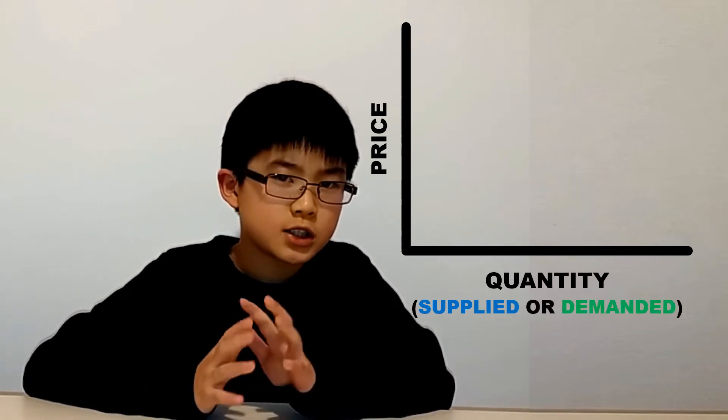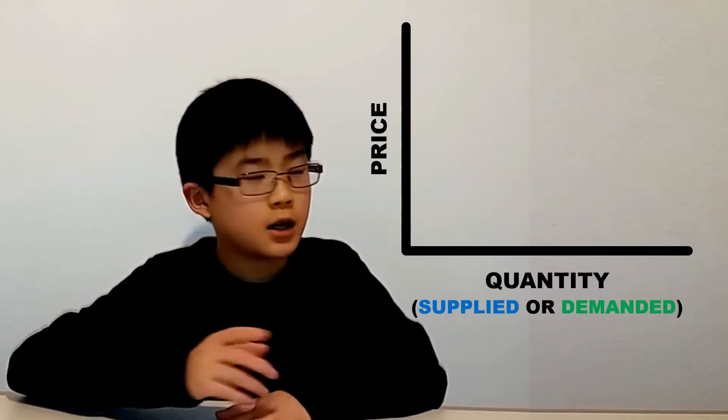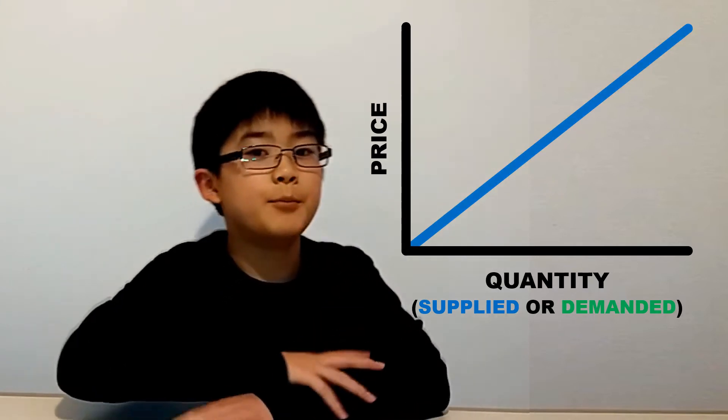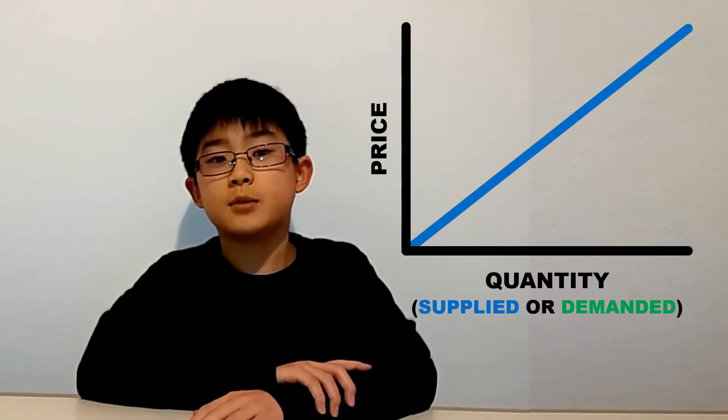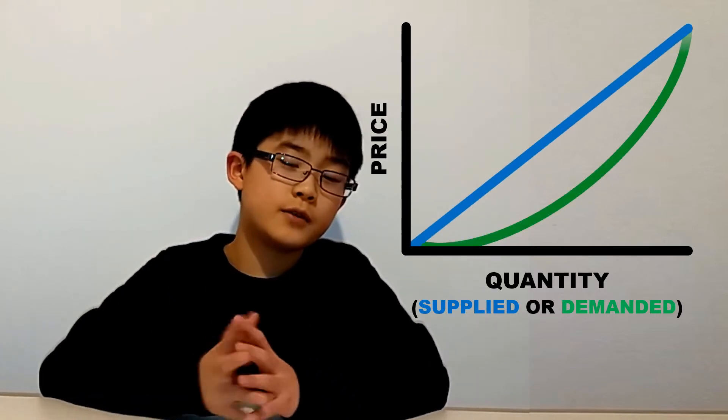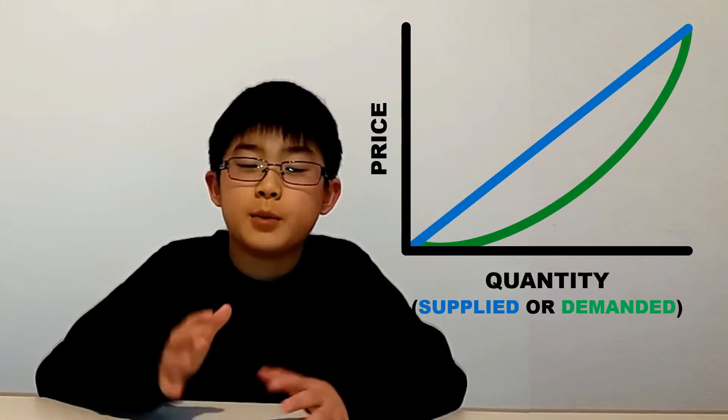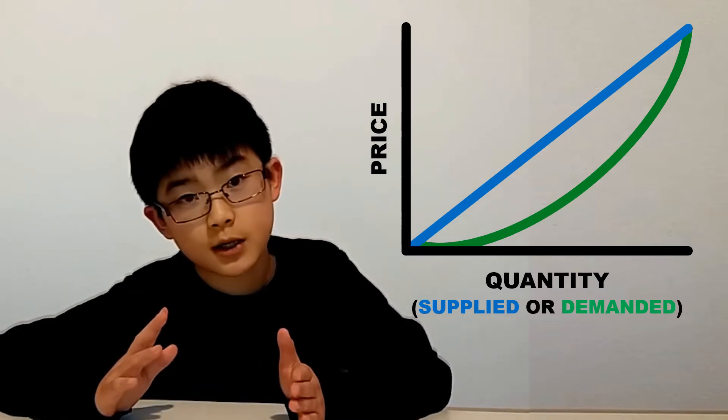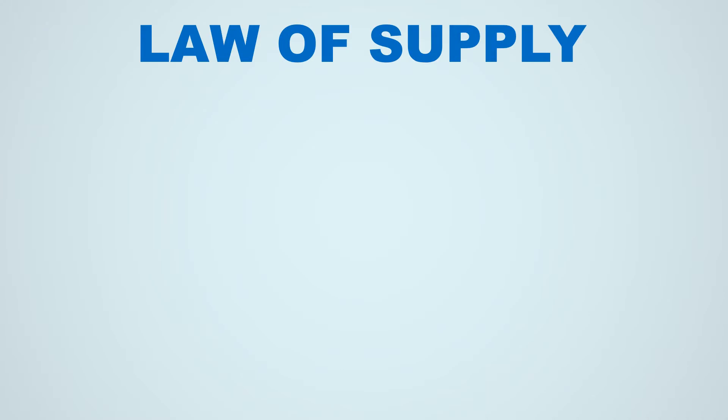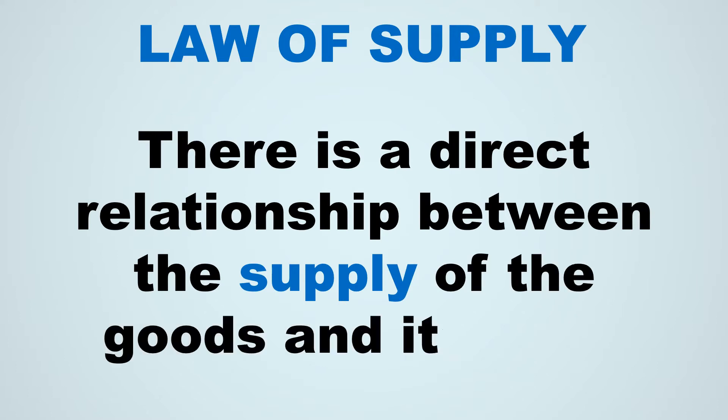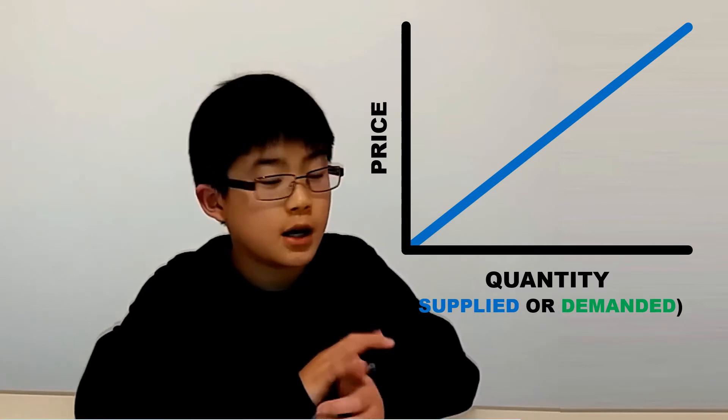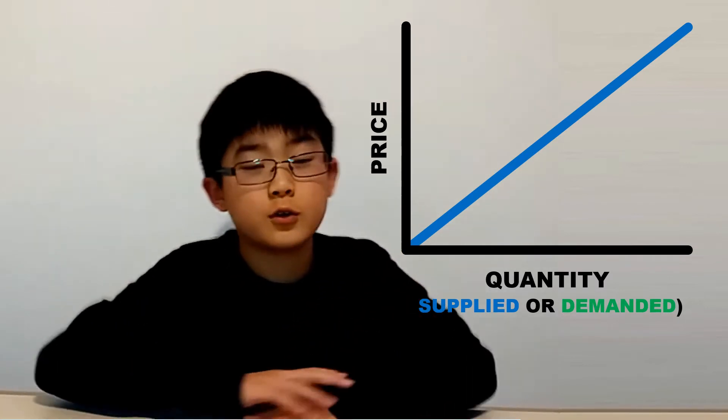We're going to start with the supply curve. This curve starts from the bottom left all the way to the top right. It changes in steepness and can be curved depending on what product we're talking about, but for simplicity, we're just going to stick with a perfectly linear line. The law of supply tells us that there's a distinct relationship between the quantity supplied and the price.